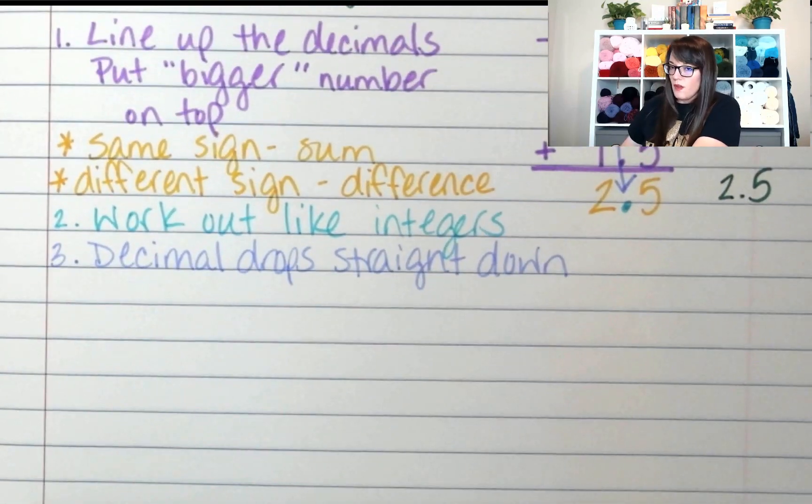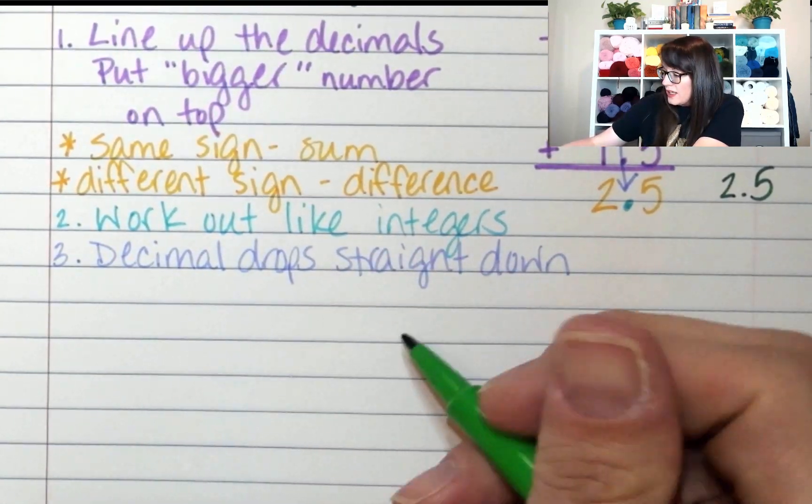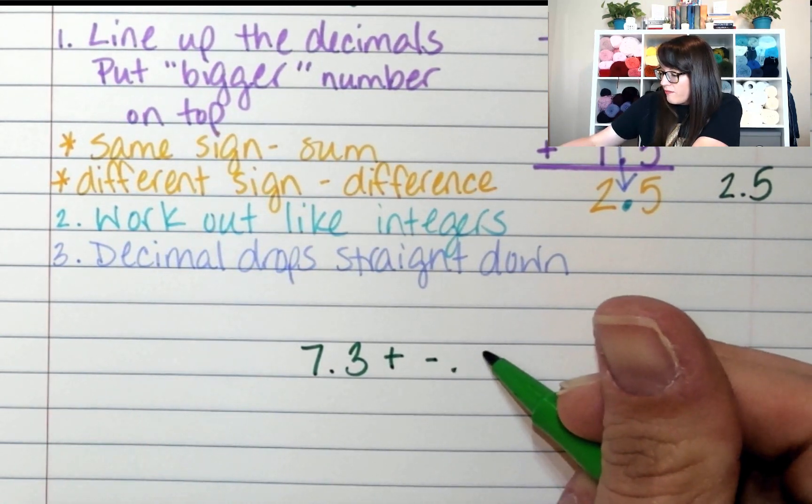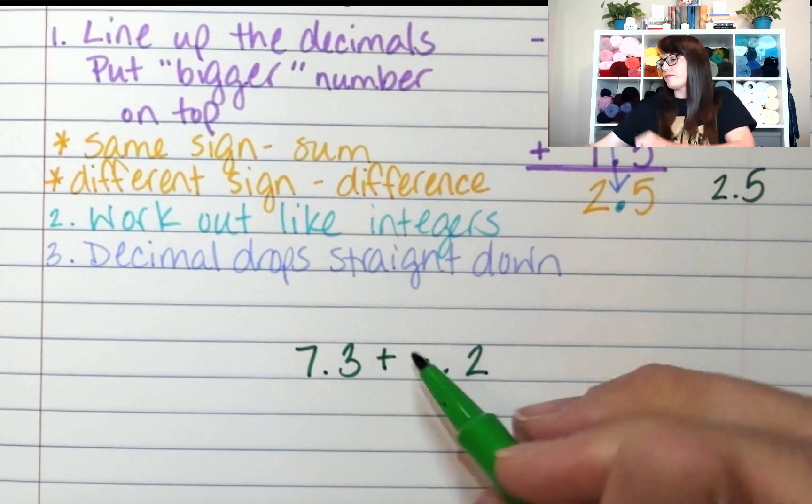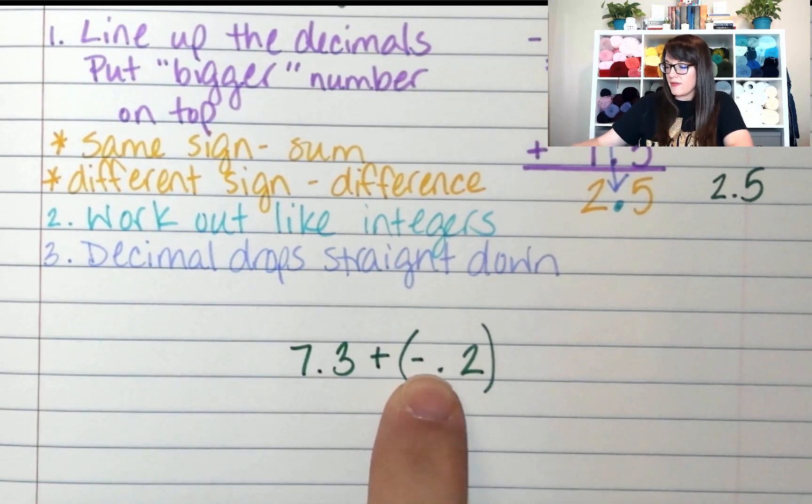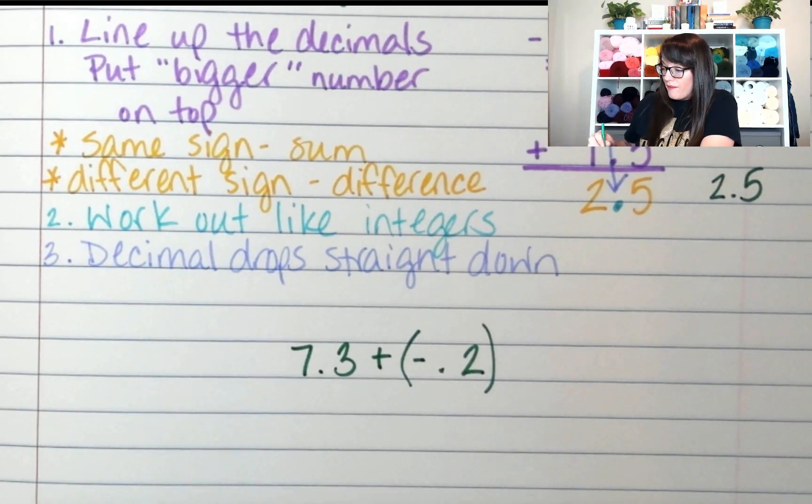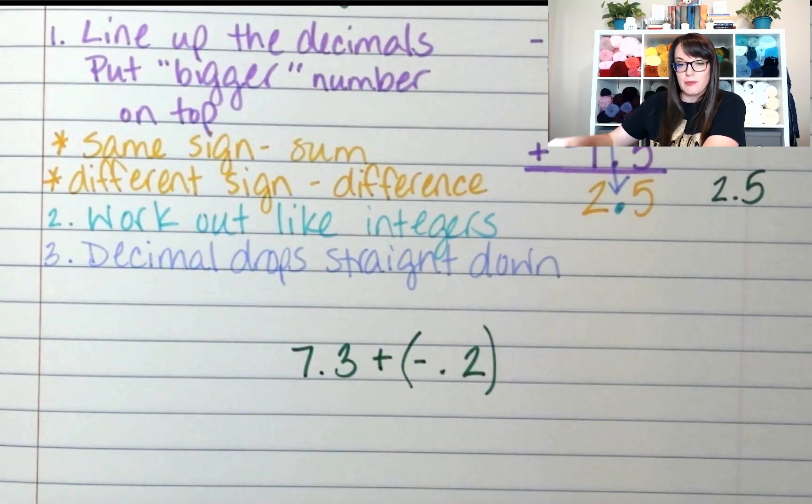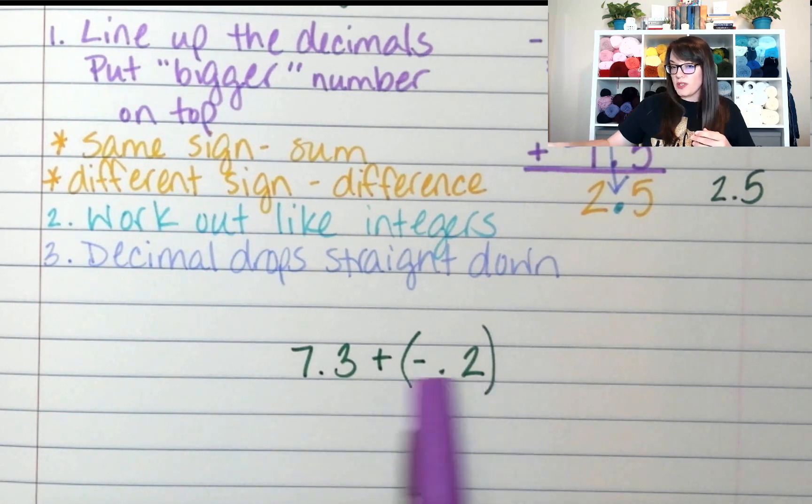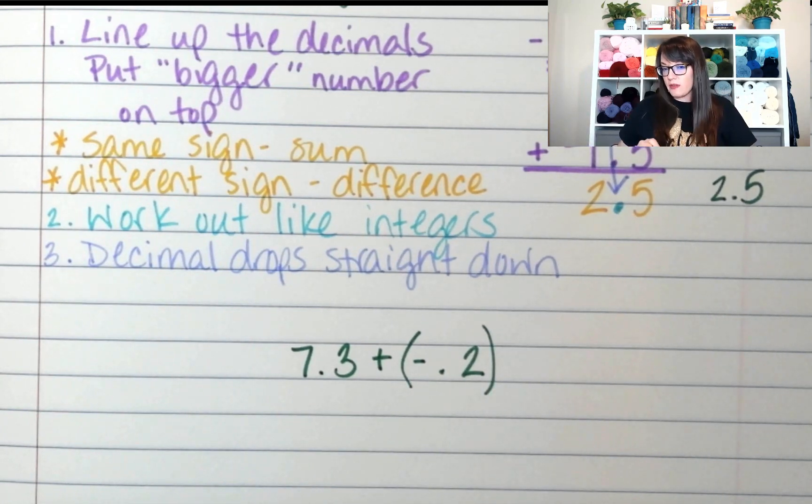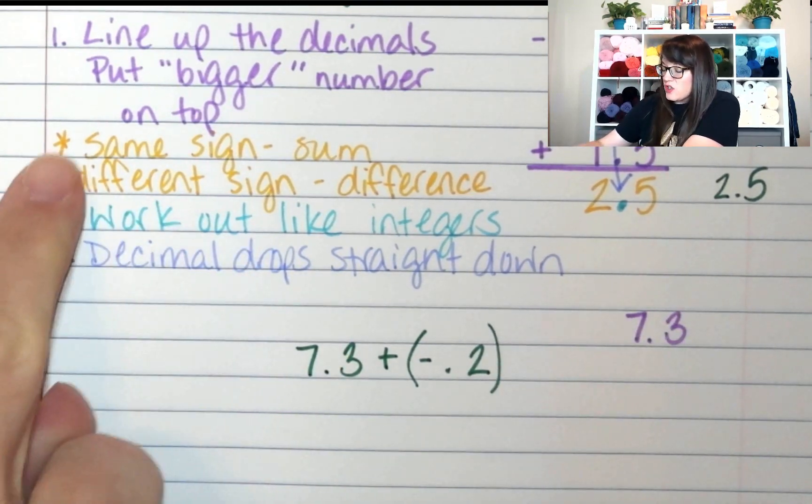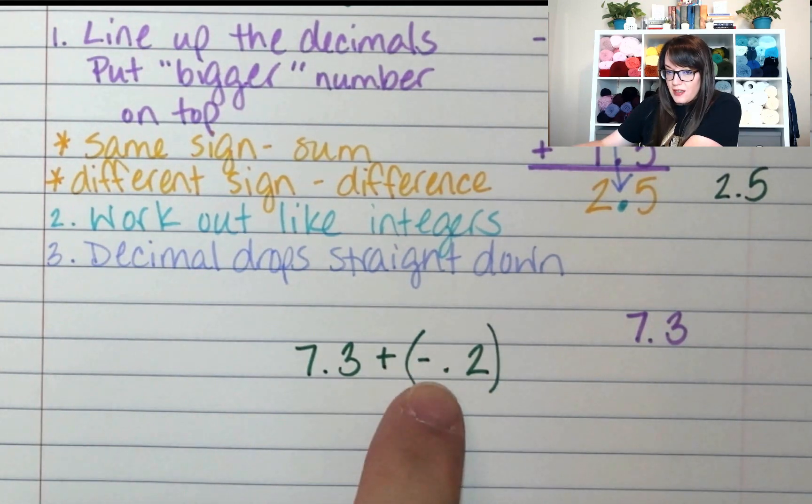Let's try one more. What if you had 7.3 plus negative 0.2? We're going to put parentheses around that to keep the plus sign separate from the negative sign. I'm going to line up the decimals and I'm going to put my bigger number on top. That 7.3 is bigger, so I'm going to put it on top.